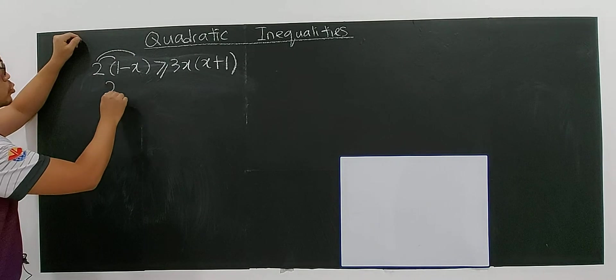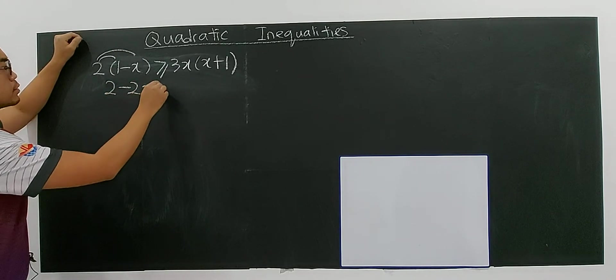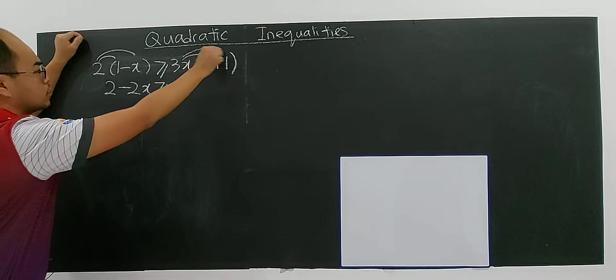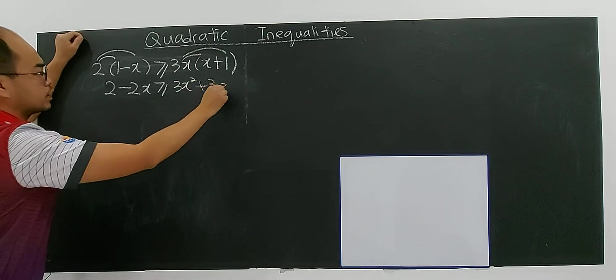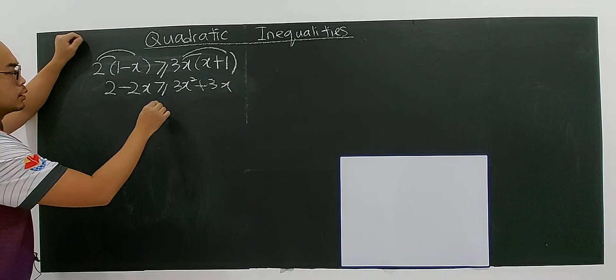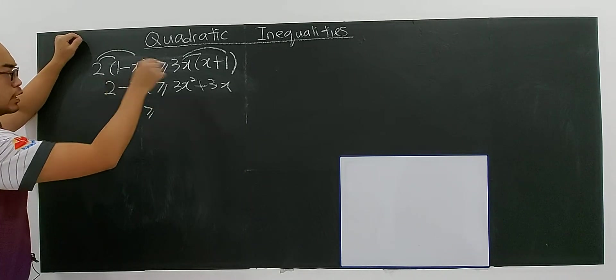You can expand: 2 minus 2x greater or equal to 3x to the power of 2 plus 3x. So you can bring over all this to the other side.